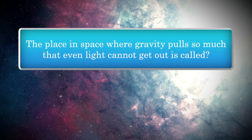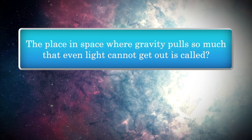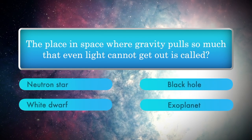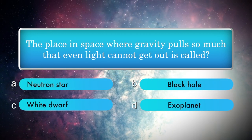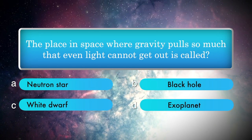The place in space where gravity pulls so much that even light cannot get out is called? Options: Neutron star, Black hole, White dwarf, Exoplanet.